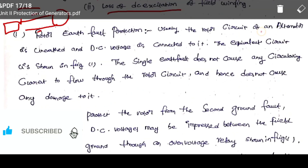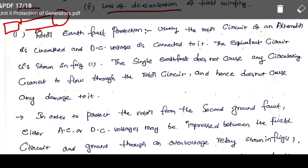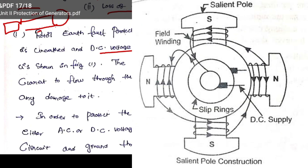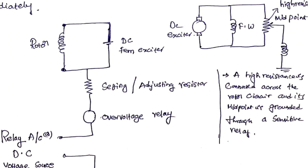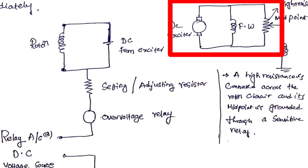Coming to rotor earth fault protection: usually, the rotor circuit of an alternator is not earthed and DC voltage is connected to it — plus and minus are directly given, no earth. The single earth fault does not cause any circulating current to flow through the rotor circuit, and hence does not cause any damage to it.